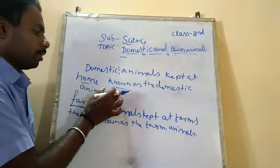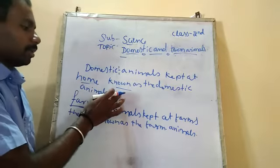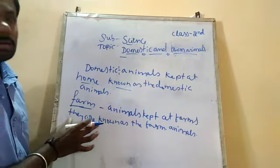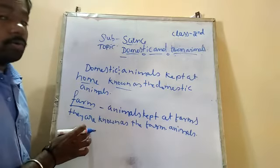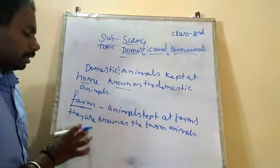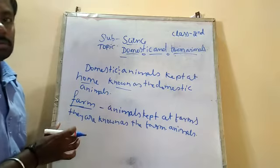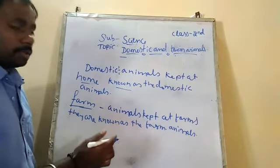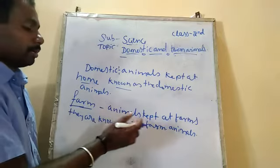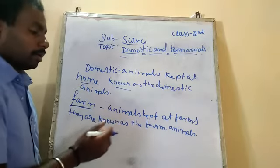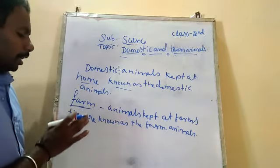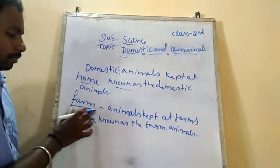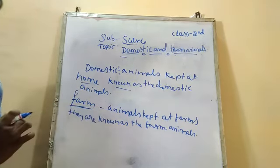For domestic animals, you can give the example of the cat and the dog. For farm animals, you can give the example of the cow and the hen — these are kept and reared in the farms. There will be special care taken in the farms, such as health and food. They are known as the farm animals.